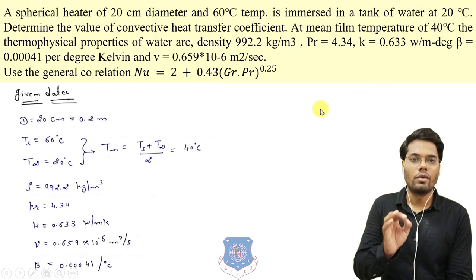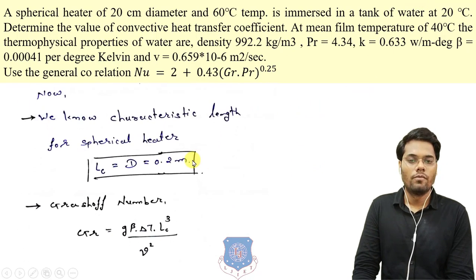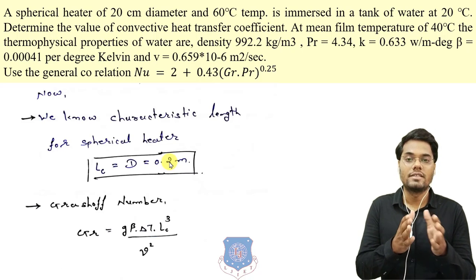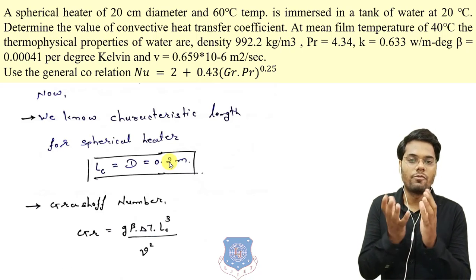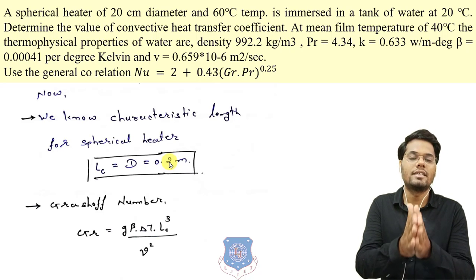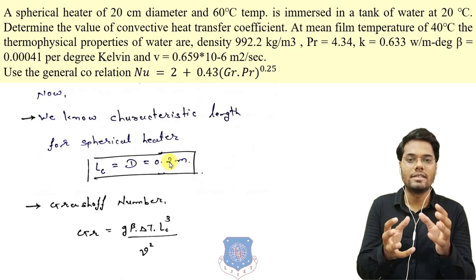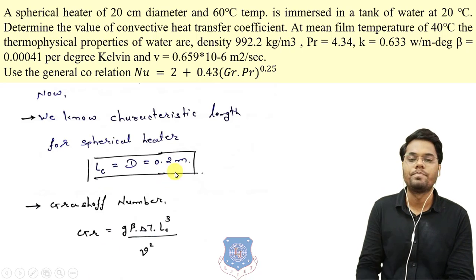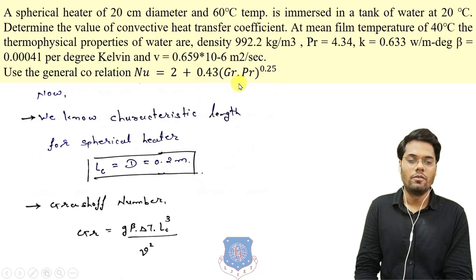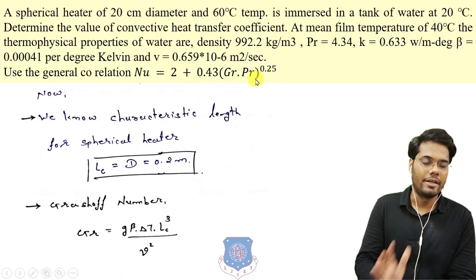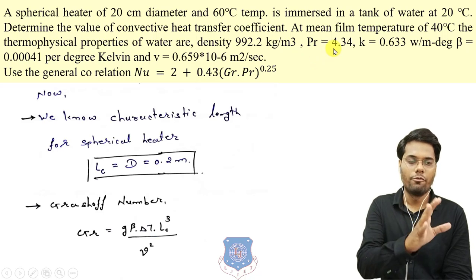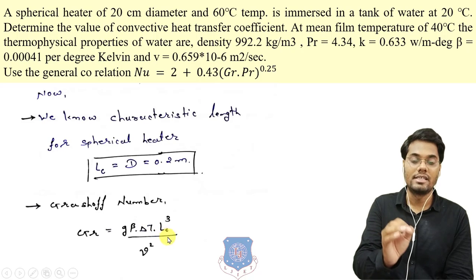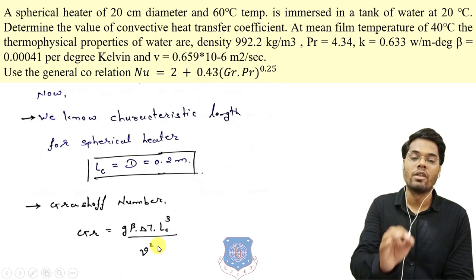First we need to decide the characteristic dimension. For a spherical heater, the characteristic length is its diameter, which is 0.2 meter. To use the correlation we require the values of Grashoff and Prandtl numbers. The Grashoff number equation is: Gr = β·g·ΔT·Lc³ / ν².